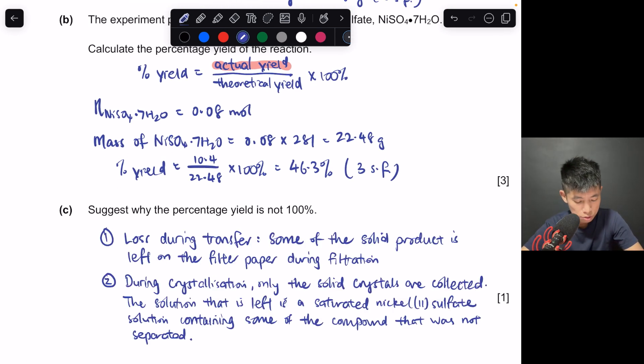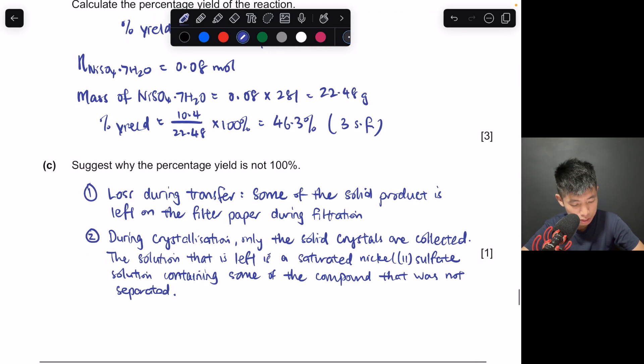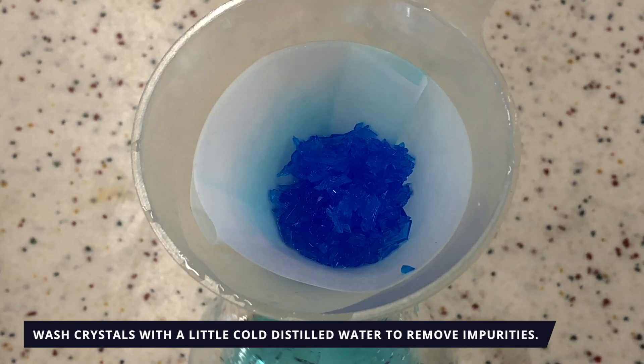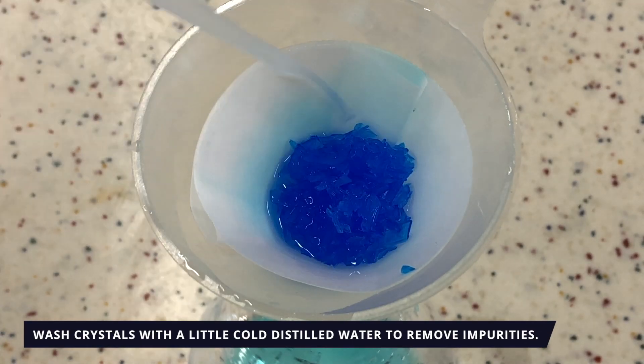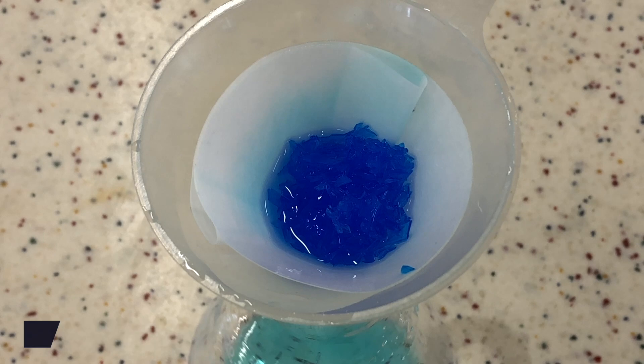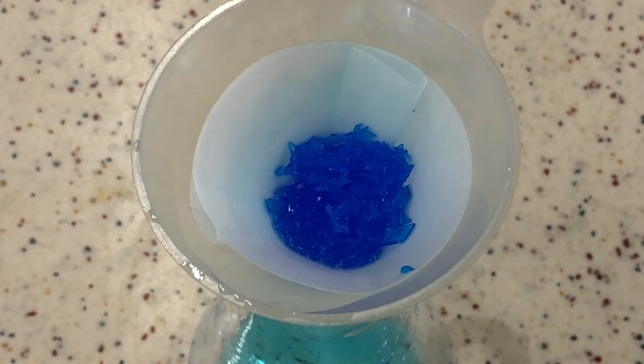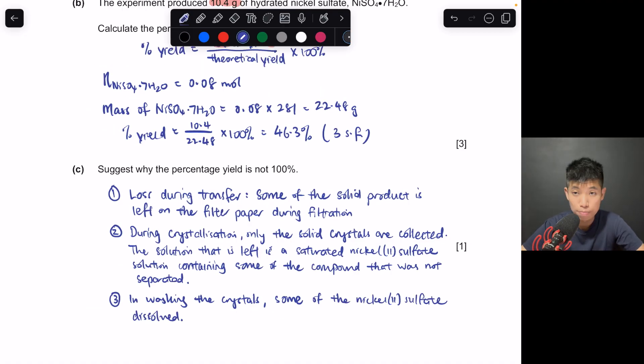So why is the percentage yield not 100%? There are a few reasons. So the first reason is loss during transfer. As we've mentioned, maybe when transferring the solid from one place to another, some of it is left, let's say on the filter paper. The second thing is, if let's say you're carrying out crystallization, when you crystallize the solid, you still have the solution, saturated solution that contains some of the dissolved solute. So you don't get 100% separation. And maybe when you do the washing step, when you wash the crystals, if you don't use a little cold distilled water, what happens? Some of the crystals may dissolve.